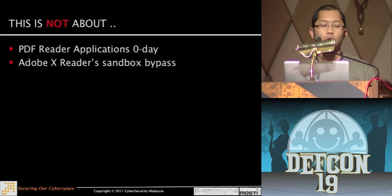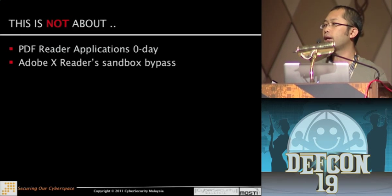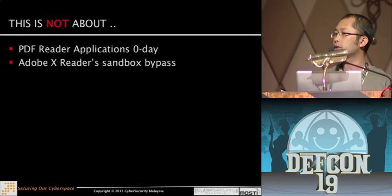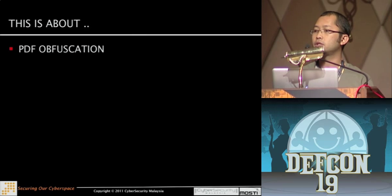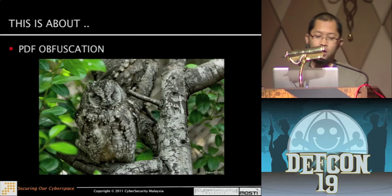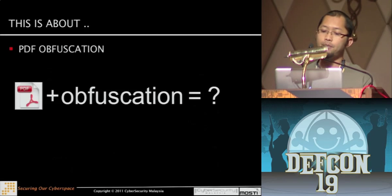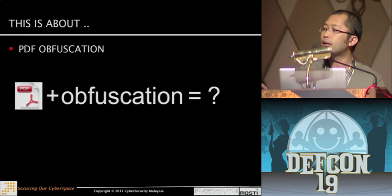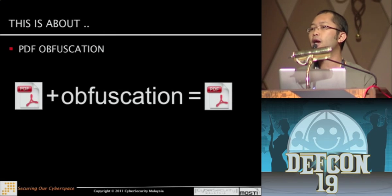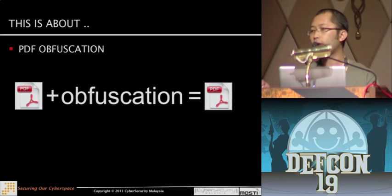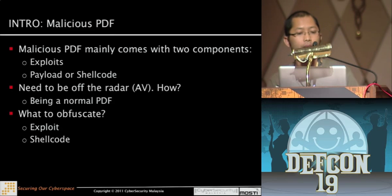This is not about PDF reader application zero-days, and it's not about Adobe Reader sandbox bypass. This is plainly about PDF obfuscation — camouflage. When you talk about obfuscation, you have a PDF plus obfuscation — what do you expect it to become? Still a PDF. The topic is: you have a normal PDF, or an exploited PDF, and you want to obfuscate it. The main reason is obvious — there are many reasons.